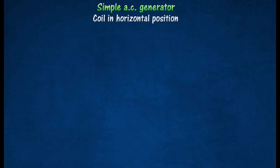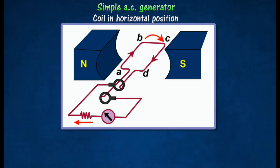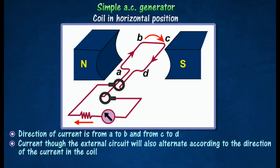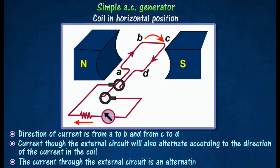As the coil continues to rotate, current will again be induced in the coil, but its direction is from A to B and from C to D. As the same slip ring is always in contact with the same brush, the current through the external circuit is thus an alternating current.